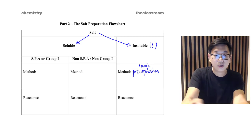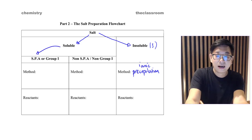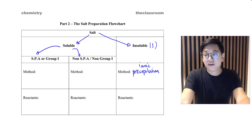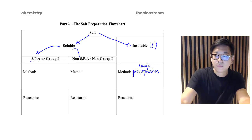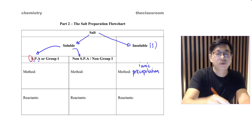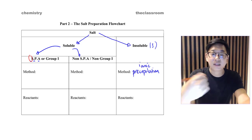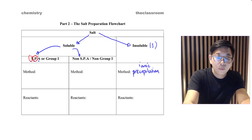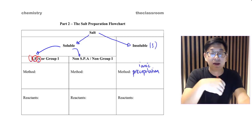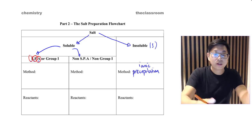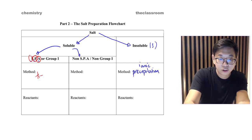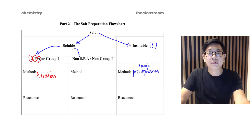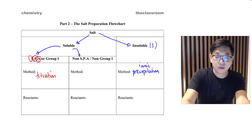If the salt is soluble, check if it's SPA or non-SPA — sodium, potassium, or ammonium. For example: sodium chloride, sodium nitrate, sodium sulfate, potassium chloride, nitrate, sulfate, or ammonium nitrate, sulfate, chloride. If it's a SPA salt or group 1 salt, we use the method known as titration. If it's not SPA and not group 1, we use the excess method.